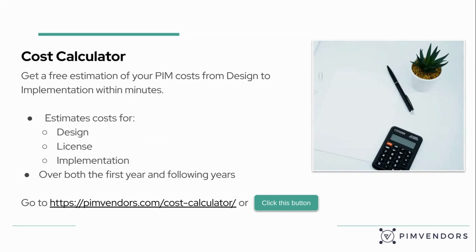Our most popular tool is the cost calculator. You can get a free estimation of your PIM costs from design to implementation within minutes. You get the estimation not just for the first year — which will have the highest costs — but also over the following years. So you can get a total cost of ownership for a PIM tool that fits your requirements or your business. It's a rough estimation, but it's a good indication of cost levels in your case. You can follow the link or click the button.